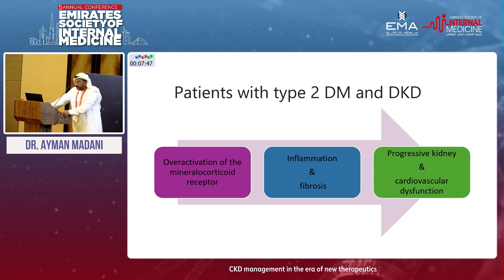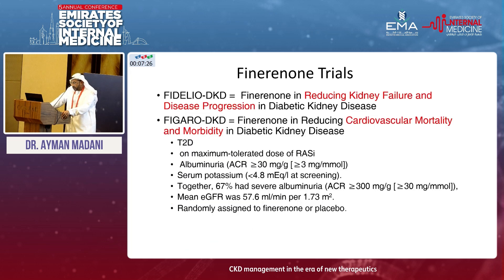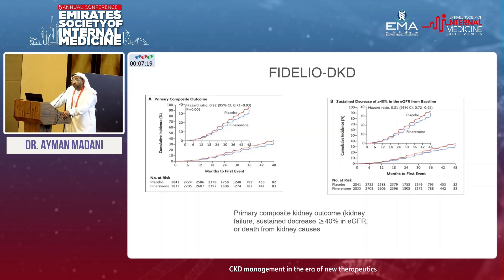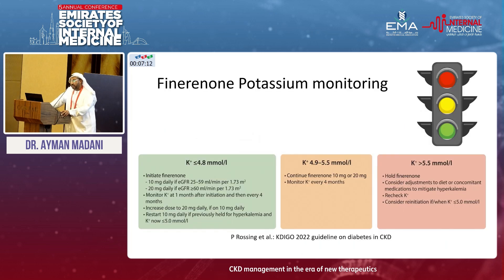Moving on to another group: finerenone, a non-steroidal MRA, brought into focus based on over-activation of mineralocorticoid receptors leading to inflammation, fibrosis, and progressive kidney damage. The FIDELIO and FIGARO studies both had good outcomes, and therefore non-steroidal MRA has been adopted. With MRA, hyperkalemia again comes up: if potassium is low, just monitor; if between 4.9 and 5, continue and monitor every four months; if high, stop or consider using a potassium binder — binder being the best choice.